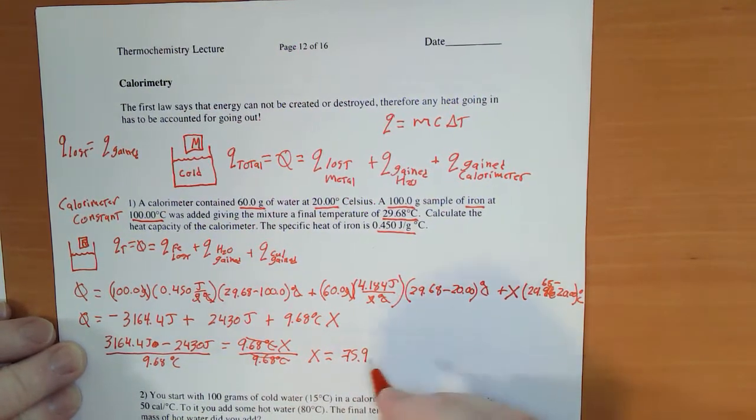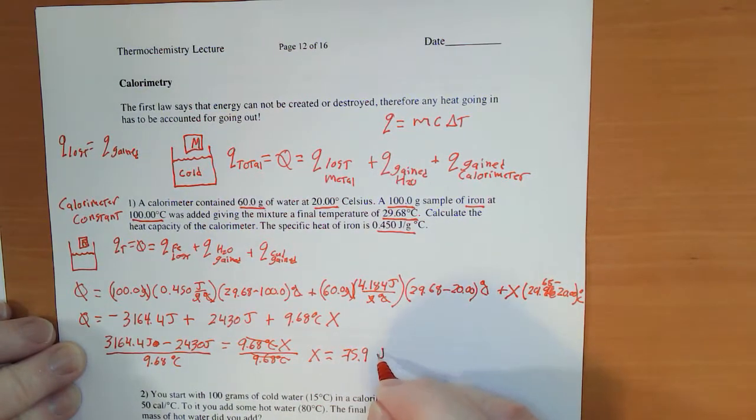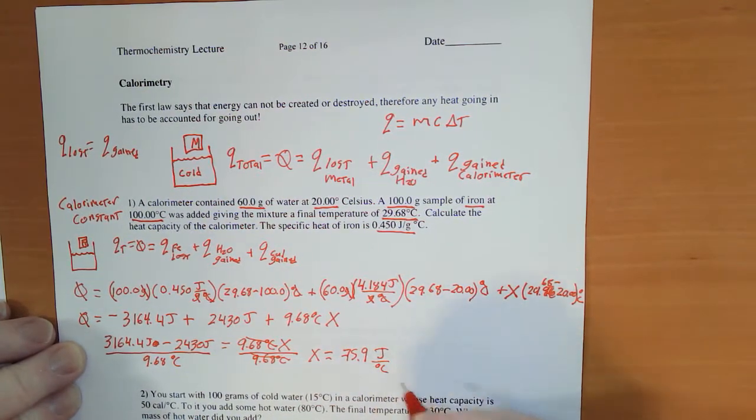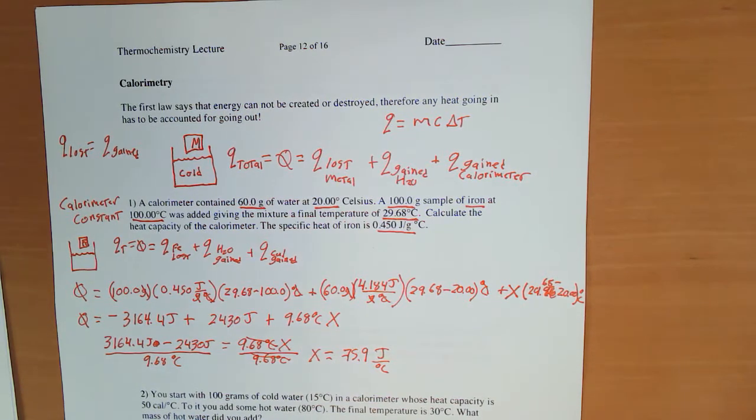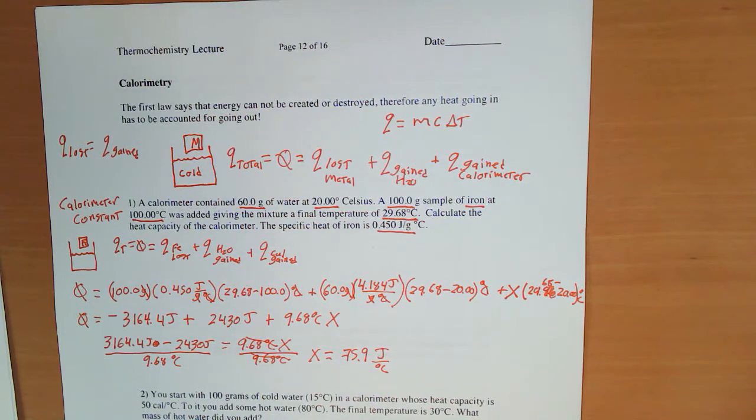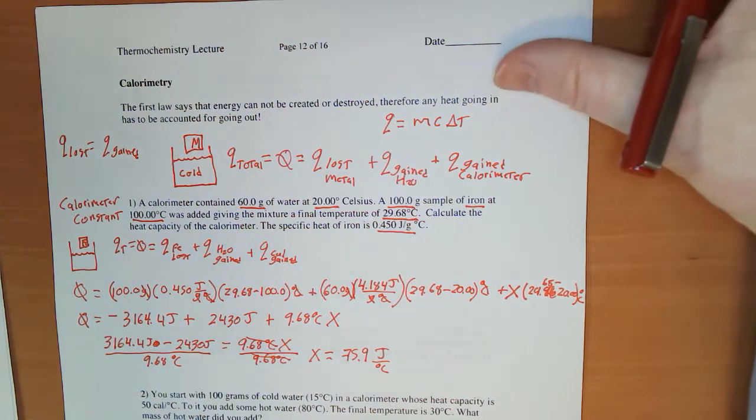Joules divided by degrees Celsius. And that's a pretty typical way for us to express a calorimeter constant, joules per degree. No mass is going to be involved.